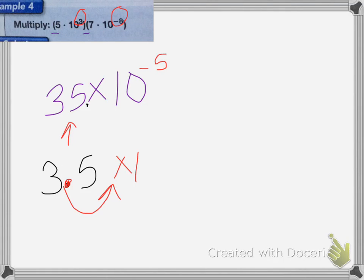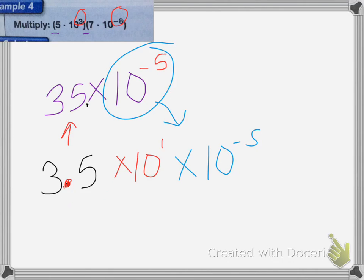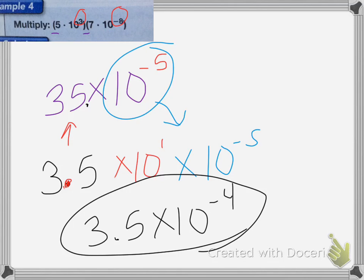So that's going to be times 10 to the first power, and then I have to add this amount back in. So I'm going to times by 10 to the negative 5th power. So 10 to the first power times 10 to the negative 5th power equals 3.5 times 10 to the negative 4th power as my total amount. And that's it for this lesson.